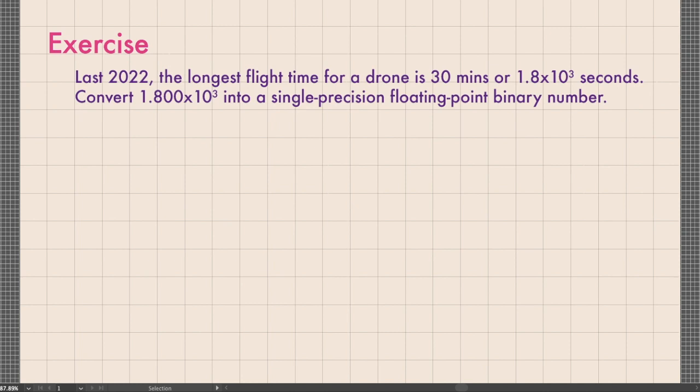As an exercise: in 2022, the longest flight time for a drone was 30 minutes, or 1.8 times 10 raised to 3 seconds. Convert 1.800 times 10 raised to 3 into a single precision floating point binary number. Pause the video and try to answer on your own, then play the video to check your answer.